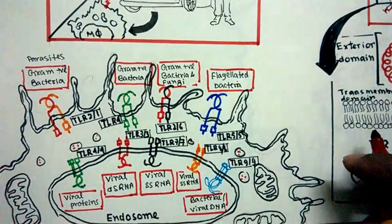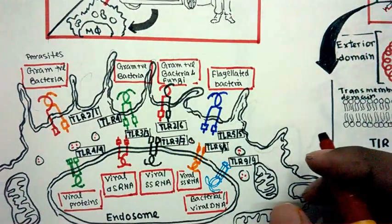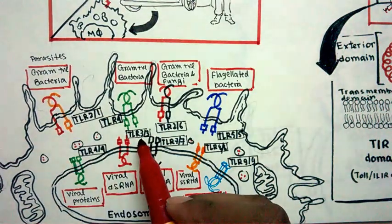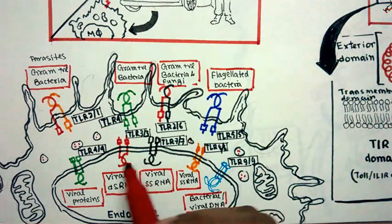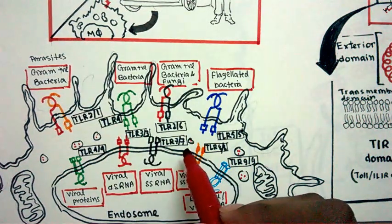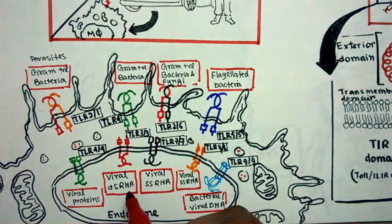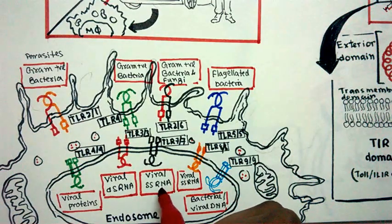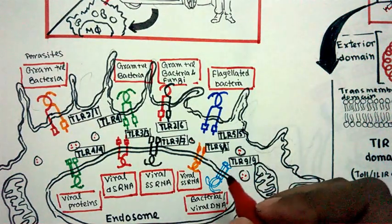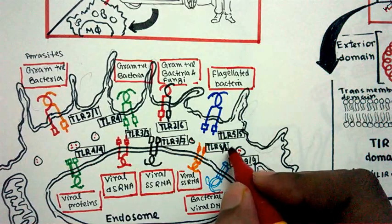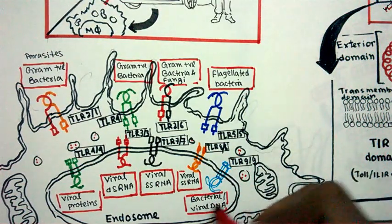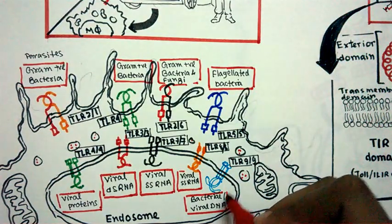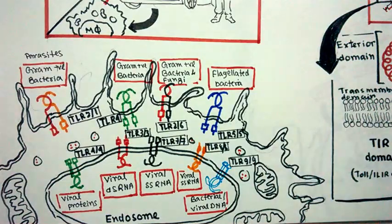Now come the endosomal TLRs, which are present in the endosome. In the endosome we have TLR4, TLR3, TLR7, TLR8, and TLR9. TLR3 and TLR7 detect double-stranded RNA and single-stranded viral RNA. TLR8 detects viral ssRNA, and the bacterial or viral DNA CpG islands are detected by TLR9.